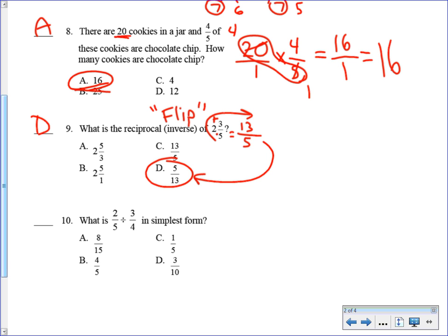Number 10. Dividing fractions. How do I know it's dividing? It has a division symbol. Keep, change, flip. Keep the two-fifths, change the division to multiplication, and flip the three-fourths, making it 4 over 3. I think you can see the answer. 2 times 4 is 8, 5 times 3 is 15.